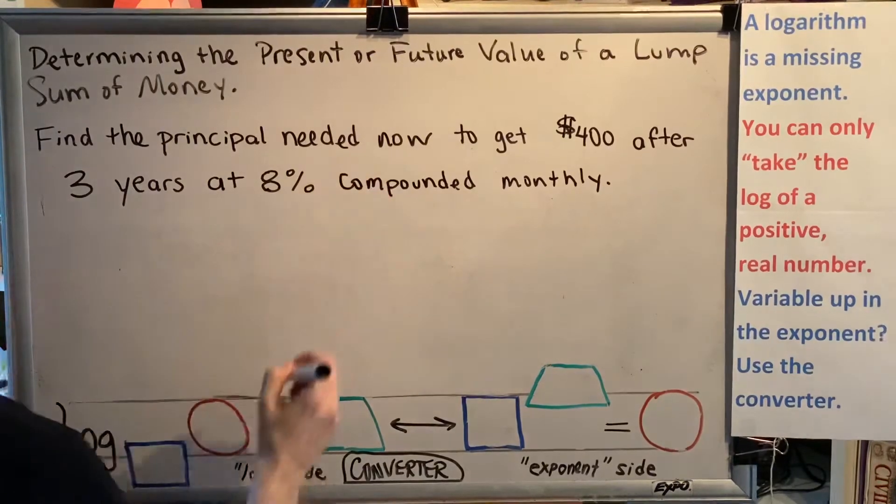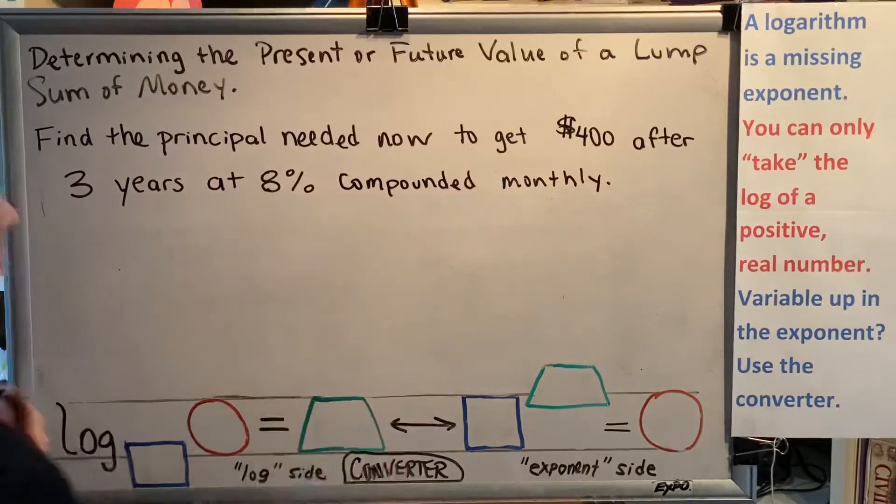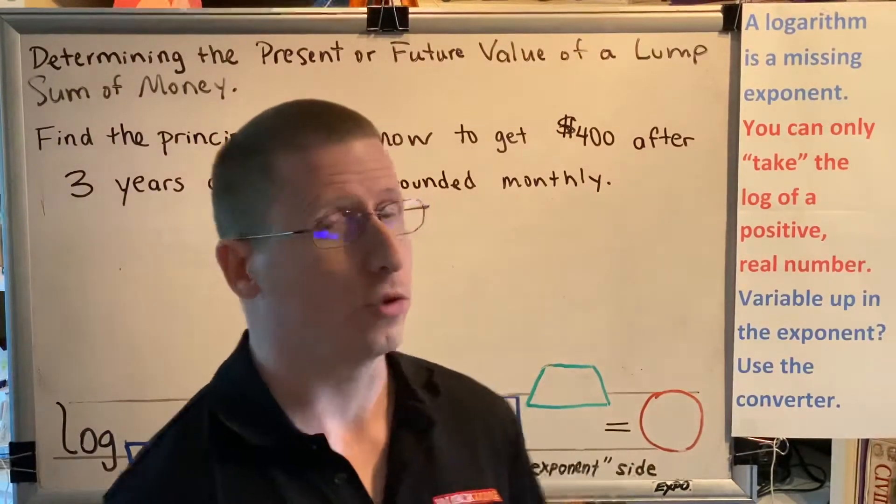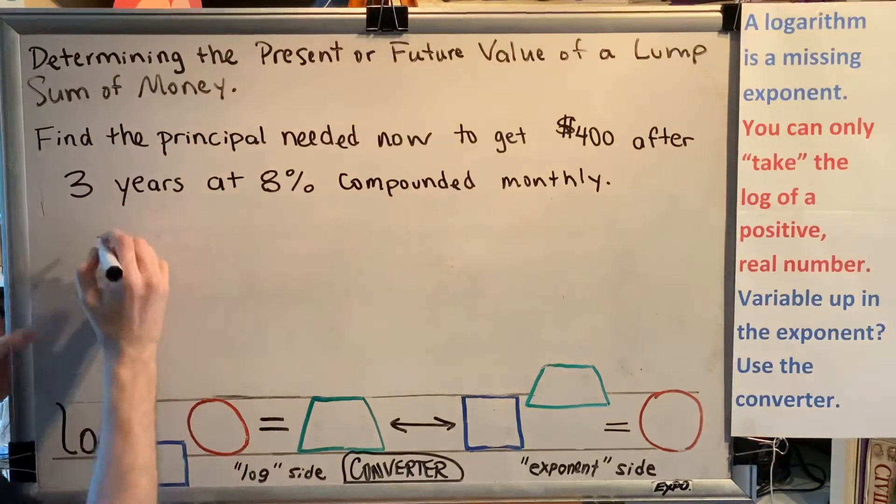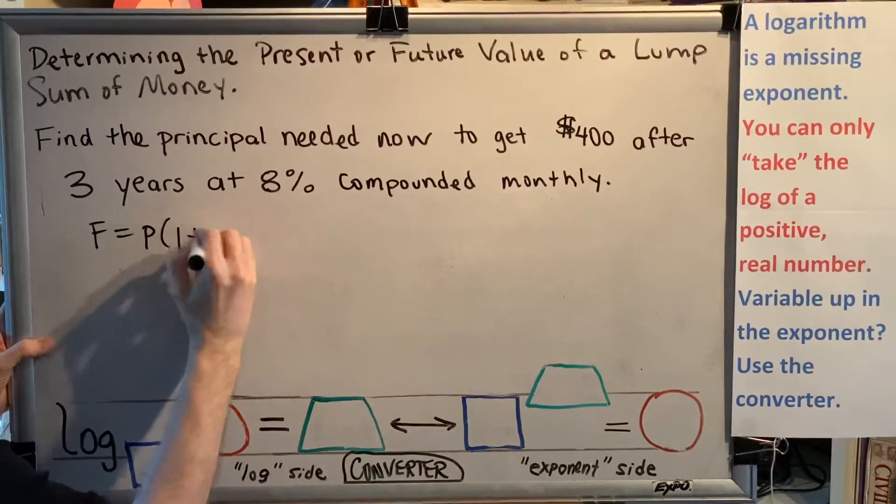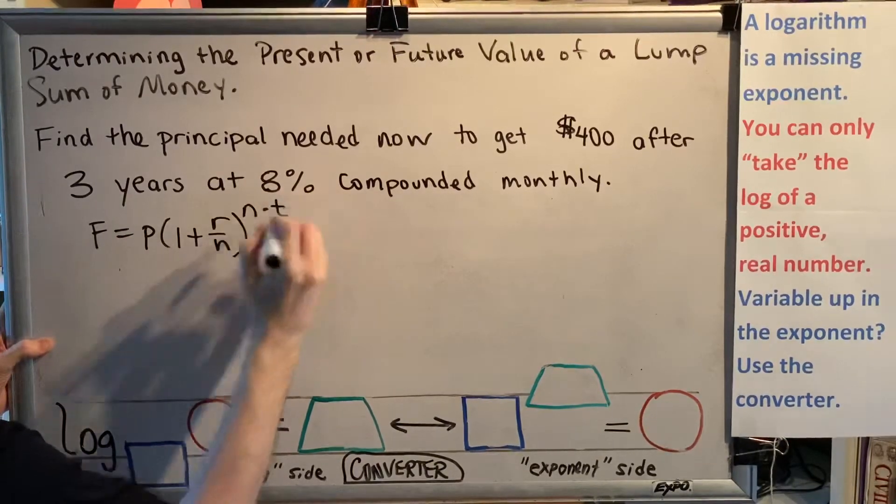The first thing I notice about this problem is that it says it's compounded monthly, meaning that it's not continuously, so I will not use the PERT formula. Instead, I will use the formula F equals P, parenthesis, 1 plus r over n, close parenthesis, to the n times t power.